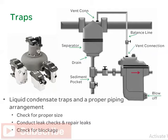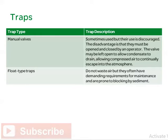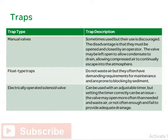Check for blockage. Manual valves are sometimes used, but their use is discouraged. The disadvantage is that they must be opened and closed by an operator. The valve may be left open to allow condensate to drain, allowing compressed air to continually escape into the atmosphere. Float-type traps do not waste air, but they often have demanding requirements for maintenance and are prone to blocking by sediment. An electrically operated solenoid valve can be used with an adjustable timer, but setting the timer correctly can be an issue. The valve may open more often than needed and waste air, or not enough, and fail to provide adequate drainage.